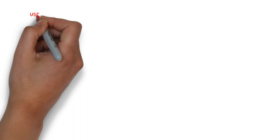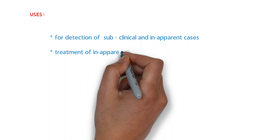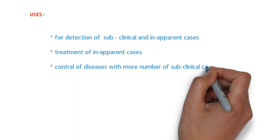So what are the uses of iceberg of disease? The uses include: detection of subclinical and inapparent cases, treatment of inapparent cases, control of diseases with more number of subclinical cases, and to have a detailed knowledge regarding the natural history of disease.